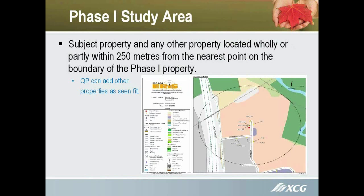Phase 1 study area: as mentioned, it's 250 meters from the nearest property boundary of the subject property. A qualified person can add other properties as they deem necessary. If they feel a certain property has a high likelihood of contaminating the subject property, they will include it, and it will be part of the Phase 1.